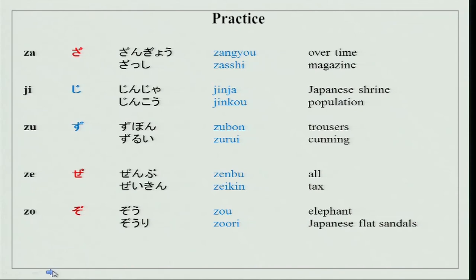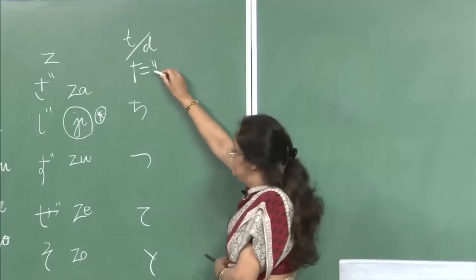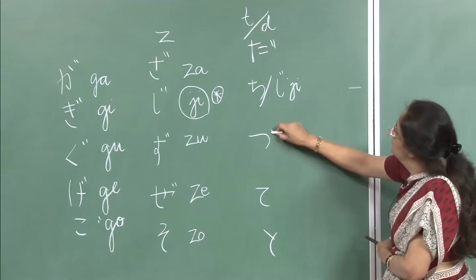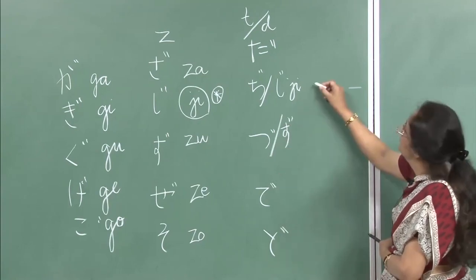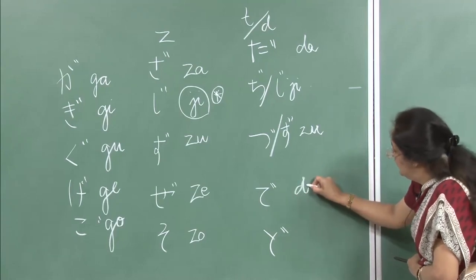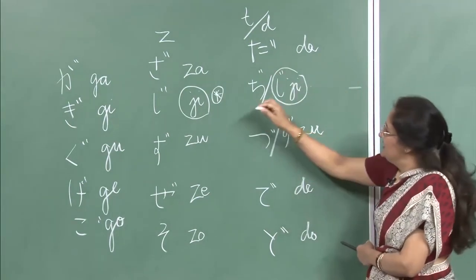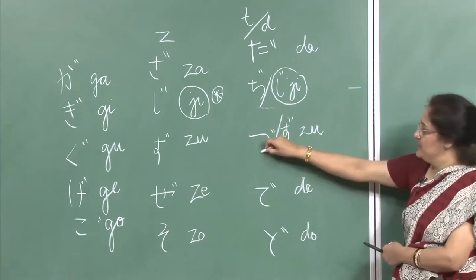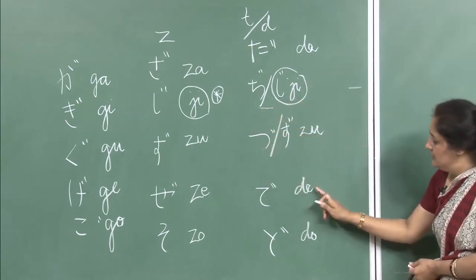We did the ta series earlier. By just putting this sign again, it becomes the d series: da, ji, zu, de and do. You will notice that two of these symbols are actually not used in hiragana when you are writing, so we have da, ji, zu, de and do — please remember that. Vocabulary: daikon, danchi. Jibiki, jisho. De: denwa, denchi. Doro, dorobo.